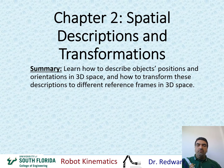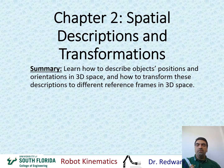The summary of this chapter: we're going to learn how to describe objects, positions, and orientation in 3D space. We're also going to learn how to transform these descriptions to different reference frames in 3D space — either transform them to a different reference frame, or transform the objects themselves within the same reference frame.